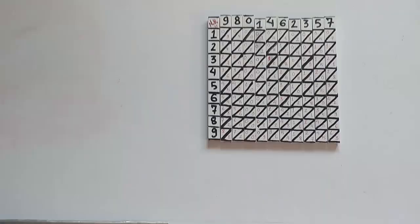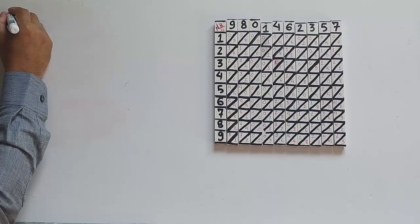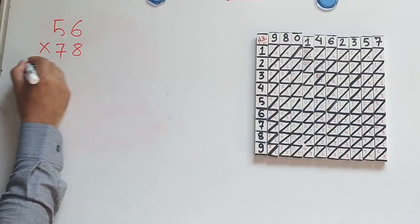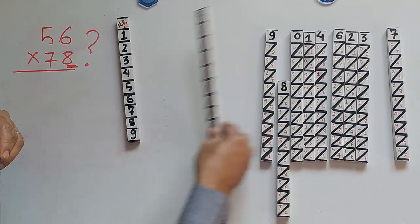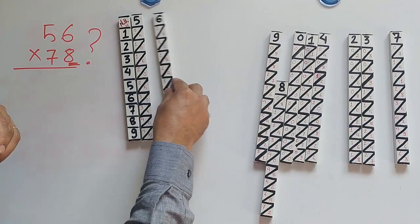So let's take another example which is 56 multiplied by 78. So how are we going to do this? Like we did before, we are going to take the columns 5 and 6. We have the columns 5 and 6.